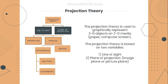The projection theory is used to graphically represent 3D objects on 2D media. For example, if you're going to construct a house, the architect and the engineer will first make floor plans — that is the 2D media. After evaluating those 2D plans, we convert them into 3D. The projection theory is based on two variables: the line of sight and the plane of projection.